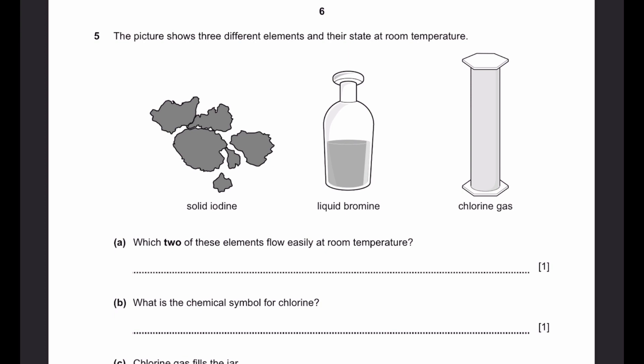Question five. The picture shows three different elements in the state at room temperature. A. Which two of these elements flow easily at room temperature? We know that liquids and gases flow easily. And over here, liquid bromine and chlorine gas, they are liquid and gas at room temperature. Therefore, it is bromine and chlorine.